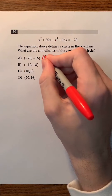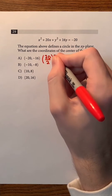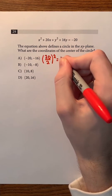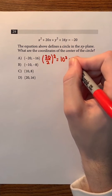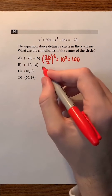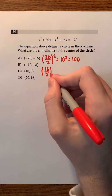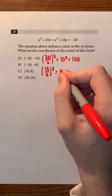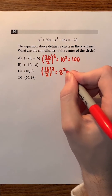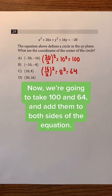We're going to begin by taking 20 and dividing it by 2 and squaring the result. After dividing we get 10 squared, which is 100. We're going to do the same thing with 16: 16 divided by 2 is 8, and 8 squared is 64.